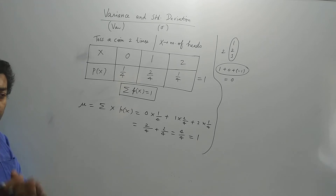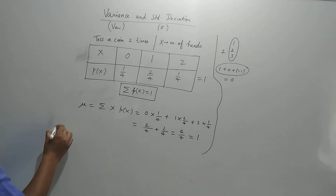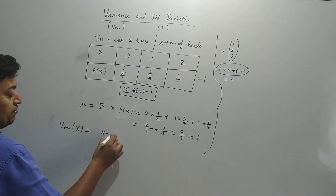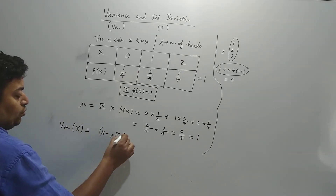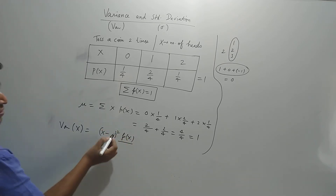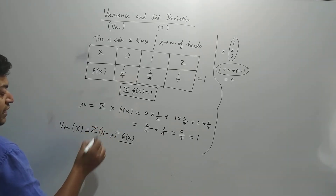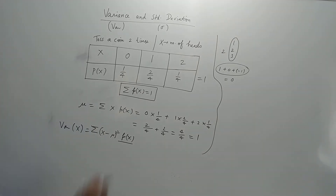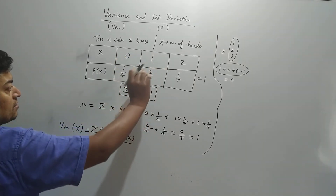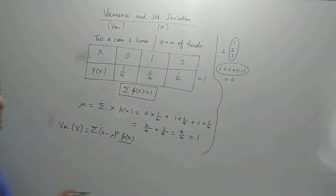We multiply the probability to each squared difference, then add them — taking the weighted mean of the squared differences. So the variance formula is: σ² = summation of (x − μ)² · P(x). For our example with μ=1: (0−1)² × 1/4 + (1−1)² × 2/4 + (2−1)² × 1/4.